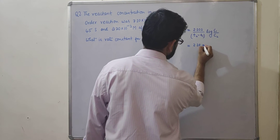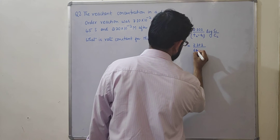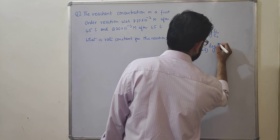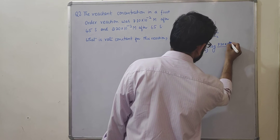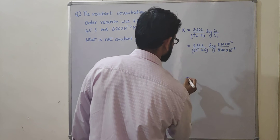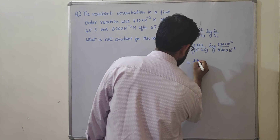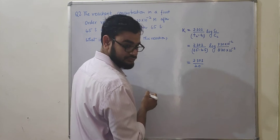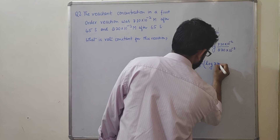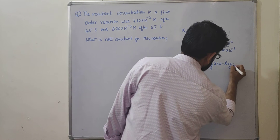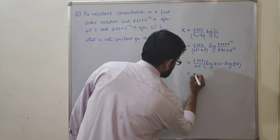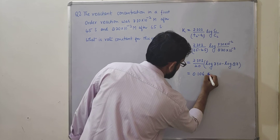Substituting values: K = 2.303 / (65 − 45) × log(7.30×10⁻² / 8.70×10⁻³). This equals 2.303 / 20 × log(7.30 / 0.87), which simplifies to 2.303 / 20 × log(7.30) minus log(0.87). Solving this equation, we get K = 0.106 s⁻¹.